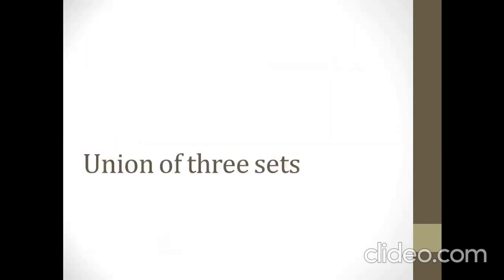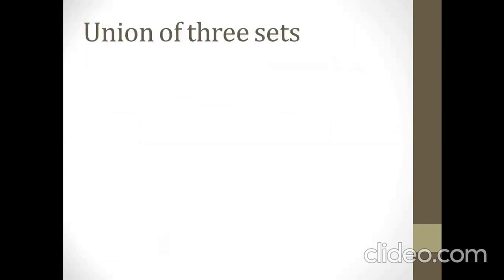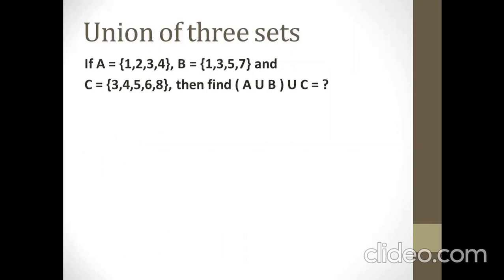Let's start with union of three sets. Suppose we have three sets A, B, and C, in which the elements of set A are 1, 2, 3, 4; while B has the elements 1, 3, 5, and 7; and C has 3, 4, 5, 6, and 8. We have to find A union B union C. Let's start the solution.